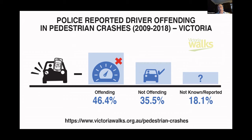One of the interesting things you don't usually see in this sort of reporting that we were able to get out of this study was the police perception of whether drivers were offending in the crash. Police make a judgment in each crash about whether the driver was offending. This indicates that more often than not, the police consider the driver to be offending. They do collect reasonable information about whether the driver was intoxicated, and that indicates that driver intoxication is not a particularly significant factor in these crashes.